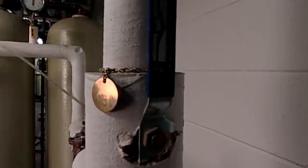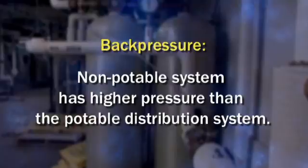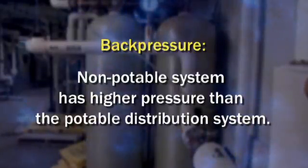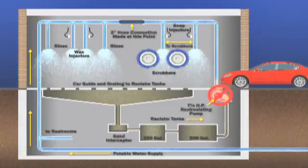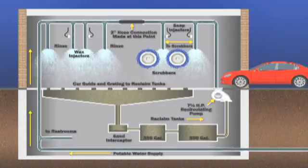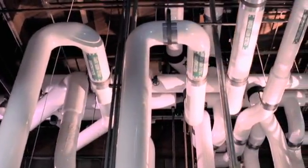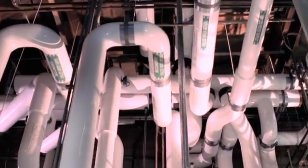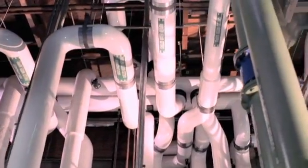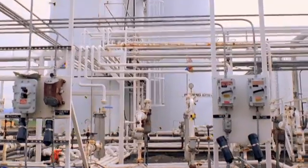The second type of backflow is back pressure. This happens when the pressure in the non-potable system is higher than the potable supply system. For example, an improperly plumbed high-pressure recycling system in a car wash can force non-potable water into potable system piping. Many commercial and industrial applications use high-pressure systems that may have cross-connections to the drinking water supply. Industrial chemical feed systems are one example.